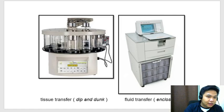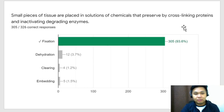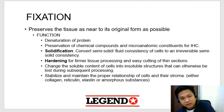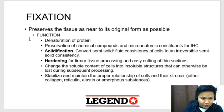Next question: small pieces of tissue are placed in solutions of chemicals that preserve by cross-linking proteins and inactivating degrading enzymes. What is being defined here would be fixation. When you say fixation, we preserve tissue as near to its original form as possible. Fixation has various functions — naka-enumerate na dito, so just go over this one.